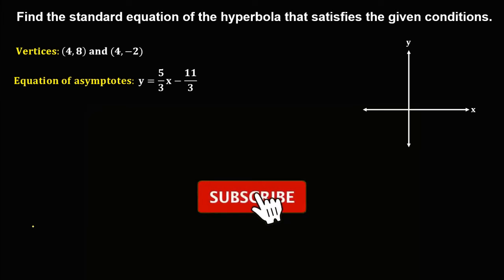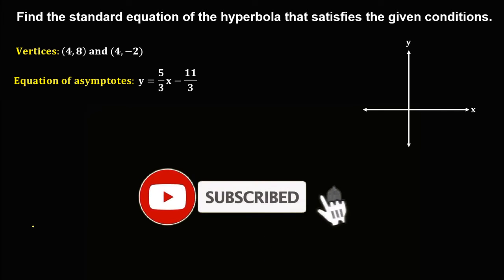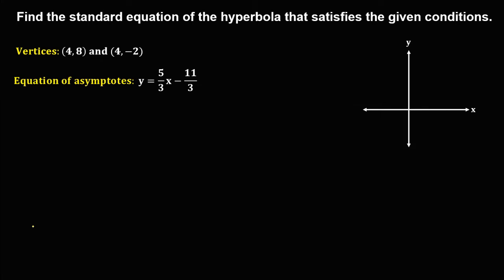Welcome to MathStorya. Let's solve this problem: find the standard equation of the hyperbola that satisfies the given conditions. We have given vertices and one equation of asymptotes.